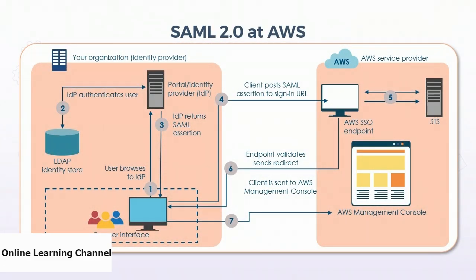Here's an example of using SAML 2.0 for federated single sign-on access to AWS. The user's browser goes to their identity provider (IDP), which queries an LDAP identity store and returns a SAML assertion to the browser. In step four, the user client posts SAML assertions to a sign-in URL — in this example, an AWS SSO endpoint. AWS uses the Security Token Service (STS) in step five, validates the assertion, and redirects back to the browser. The client can then use that assertion to access the AWS Management Console in step seven.